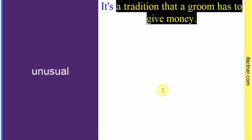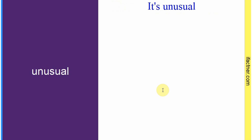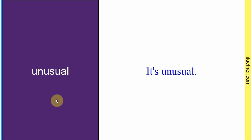Word hai: 'unusual'. Simple sentence: 'It's unusual.' Matlab — jo aam nahin hai, jo common nahin hai.